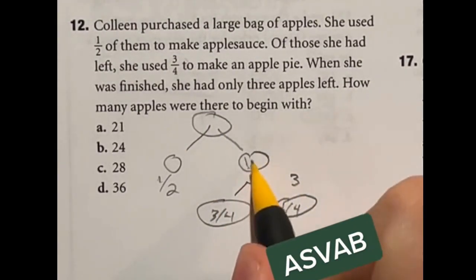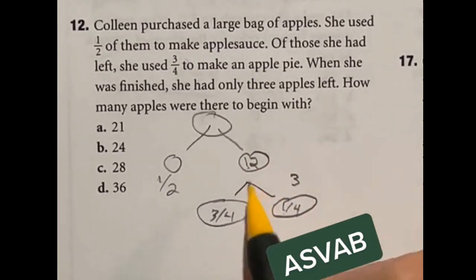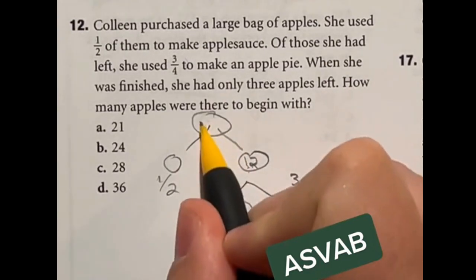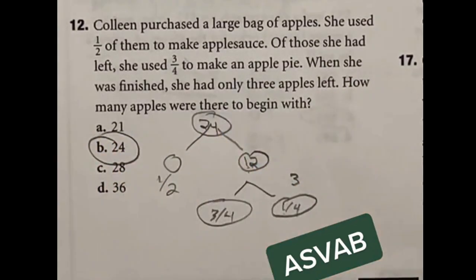Well if this were three apples and that was only one fourth of this whole right here, three times four is going to give us 12. So that's going to be 12 apples total there. And that was half of the original whole. So double this would give us 24 as a final answer which is B.